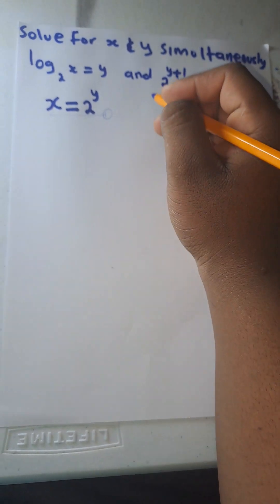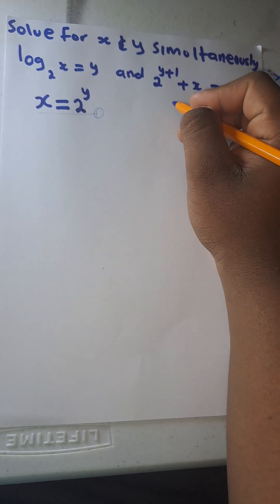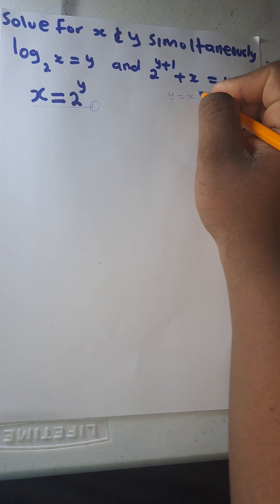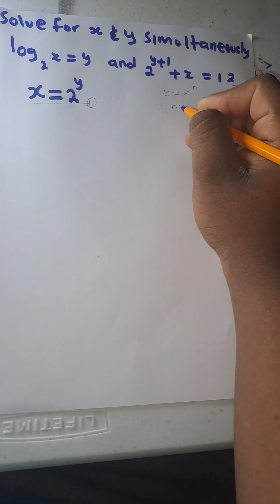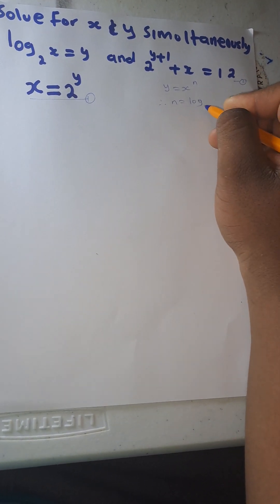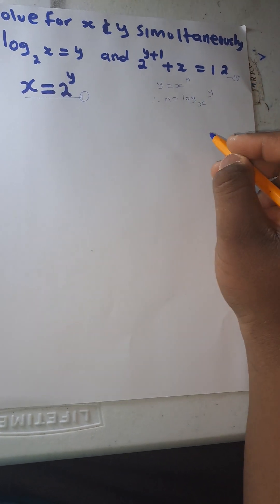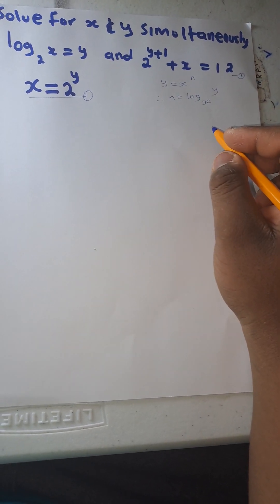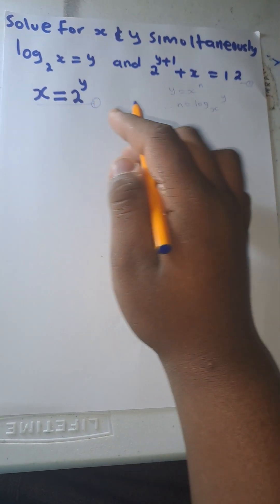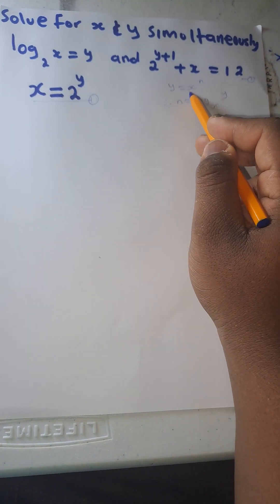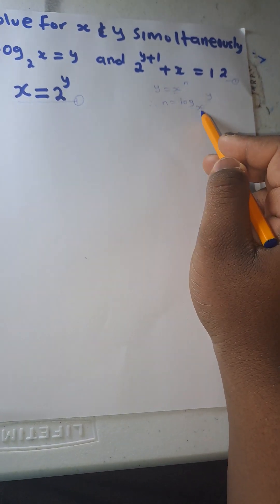So if y is equal to x to the power n, therefore n is equal to log base x of y. You see now, so they are basically the same thing.